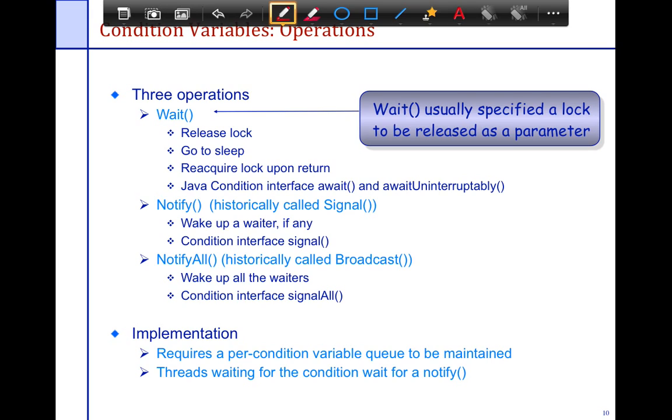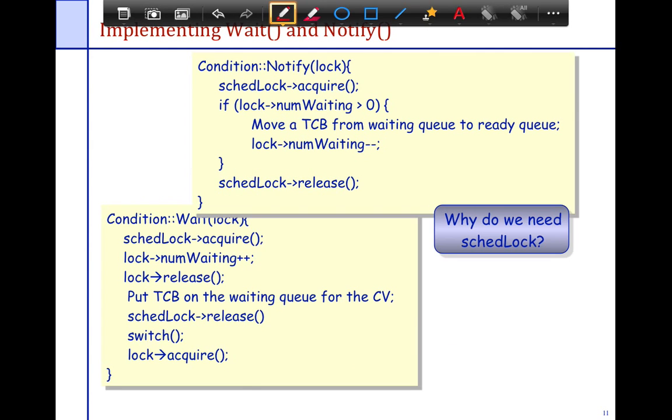And the implementation requires a per conditional variable queue to be maintained. So we also need a queue associated with the lock itself. And the threads waiting for the condition wait for a notify. Okay, so the wait usually specifies the lock that you're actually waiting on. Okay, so let's go back and take a look at how these things are implemented.